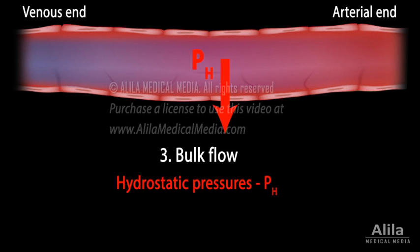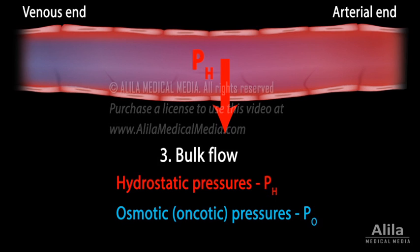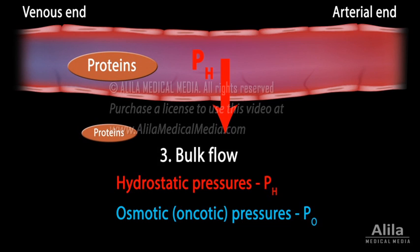Hydrostatic force is opposed by osmotic force. Osmotic force, also called oncotic pressure, is generated mainly by the difference in the protein concentrations between the blood and interstitial tissue. The blood has a much higher protein content due to albumin, and this draws water into blood vessels.